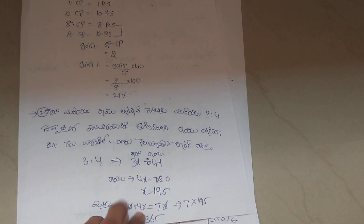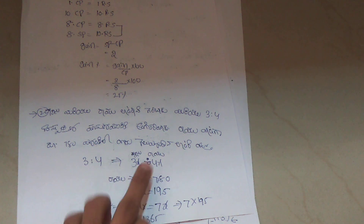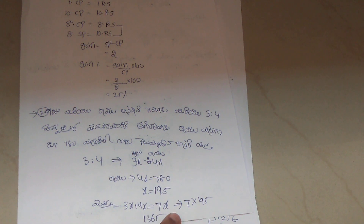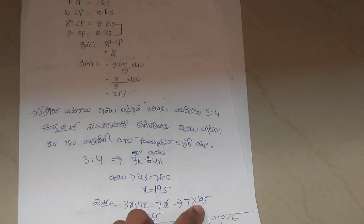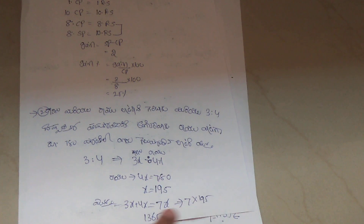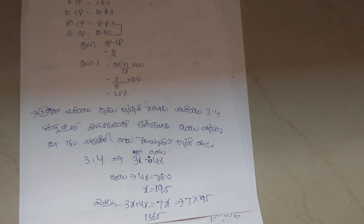Now the first step is 3x plus 4x is 7x. x will be 195. 7 into 195 is the answer.